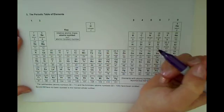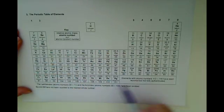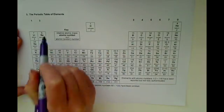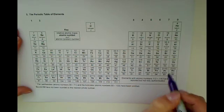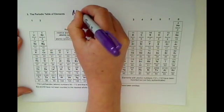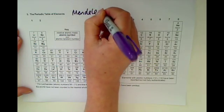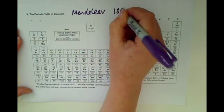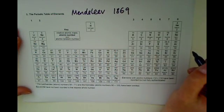The periodic table is where all of the elements, over a hundred of them, are organized. Elements meaning different types of atoms. This is organized by a scientist called Mendeleev in around 1869.